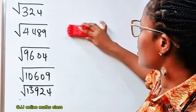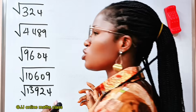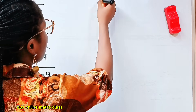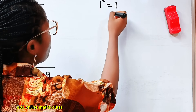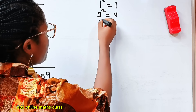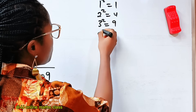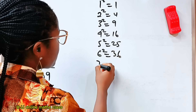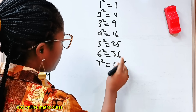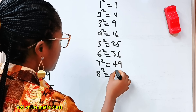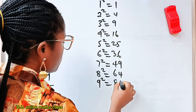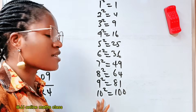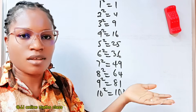The first thing you need to do is know your squares from 1 to 20. 1 squared is 1, 2 squared is 4, 3 squared is 9, 4 squared is 16, 5 squared is 25, 6 squared is 36, 7 squared is 49, 8 squared is 64, 9 squared is 81, and 10 squared is 100. It is easier to list this one — it's basic knowledge.